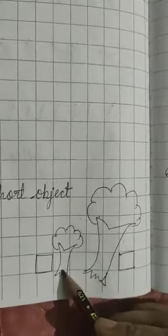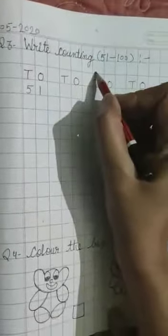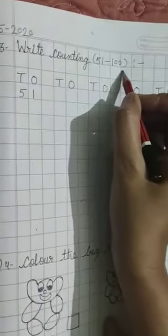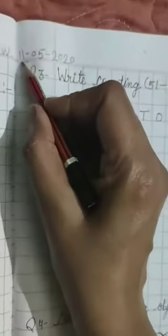Then, which is short. So, tick here. Next is right counting 51 to 100. First of all, right here date and classwork.